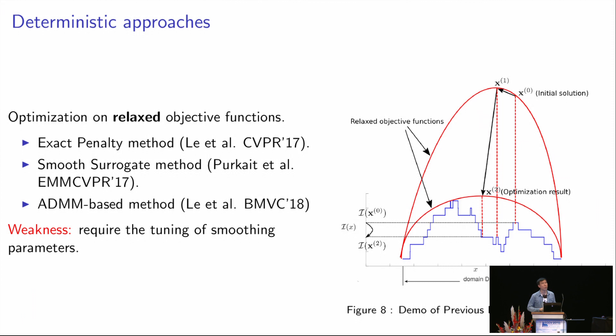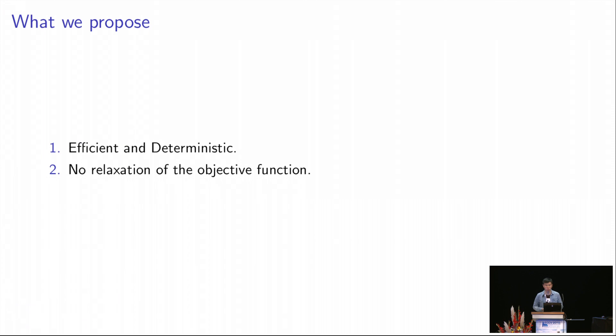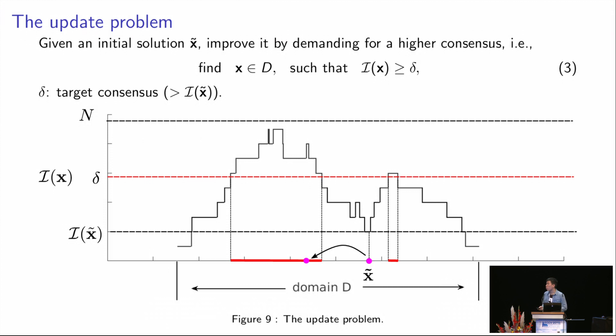To solve this problem, we propose an efficient and deterministic algorithm which does not rely on relaxation. How do we achieve this goal? We achieve this by first introducing the update problem. In this update problem, we have an initial solution x tilde, and we want to improve its quality by demanding a higher consensus, higher than delta. If this problem has a feasible solution, they must lie inside those red regions. We want to drag x tilde into those red regions by doing this feasibility test.